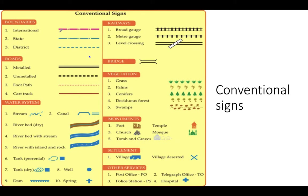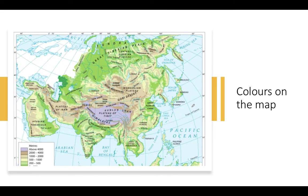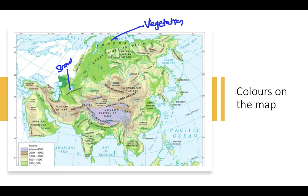There are basic conventional signs we have to remember: the pink dotted boundary is the international boundary, the blue straight boundary and sky-blue dotted boundary is the district boundary. You have to remember signs for roads, water systems, railways, beaches, vegetation, monuments, settlements, and other services. For colors on the map: green represents vegetation, white represents snow or snow fields, and brown represents plateaus. Different colors represent different things.